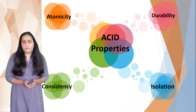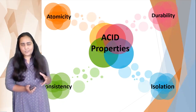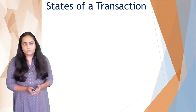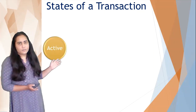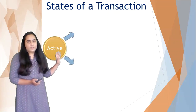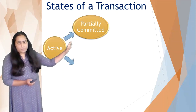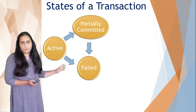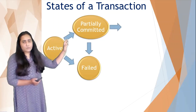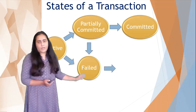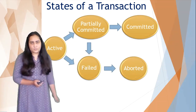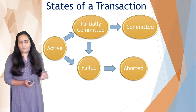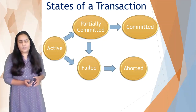Now that we've covered all four properties, let's talk about the different states of a transaction — its life cycle. The five states are: Active, Partially Committed, Failed, Committed, and Aborted. From Active, a transaction can go to Partially Committed or Failed. From Partially Committed, it can go to Failed or Committed. If a transaction has failed, it must go to the Aborted state. A transaction can be in any one of these five states at any given time.